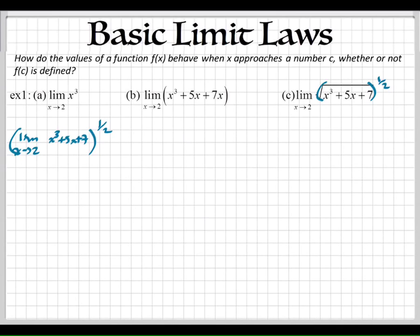Well, we can use the basic limit laws and split it up even more. Let's split up the inside. We have the limit as x approaches 2 of x to the third plus the limit as x approaches 2 of 5x plus, we're using the sum law right here, the limit as x approaches 2 of the last one which is 7. And then we're going to raise all this to the 1 half power.